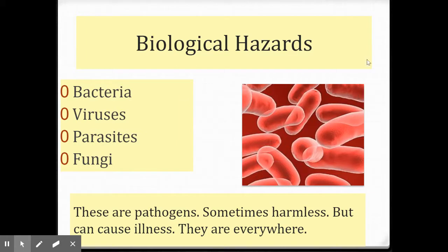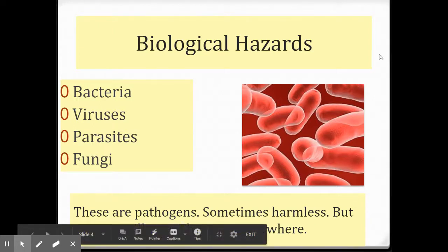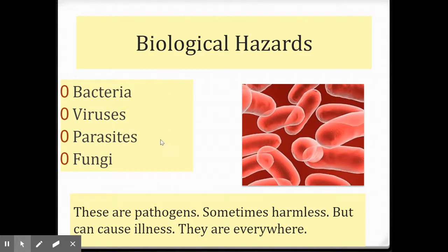The biological hazards generally cannot be seen, smelled, or tasted. There are four types of biological hazards: bacteria, viruses, parasites, and fungi. These are known as pathogens. Sometimes these are harmless — there are types of bacteria and fungi that exist in our world and don't cause us harm. But many of them can cause illness, and they are located everywhere.